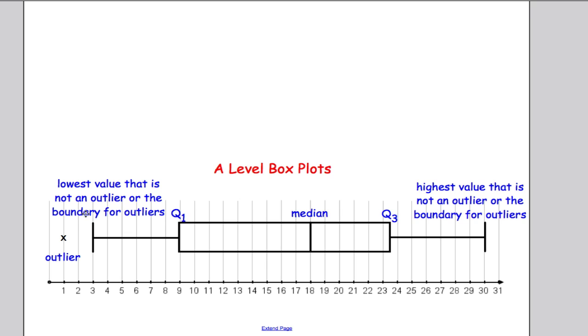So just looking at our example here, I can clearly see that this line here is going to be the lowest value that is not an outlier, and that's an outlier, and this line here is the boundary for the outliers. So this line here is the boundary for the outliers, in this case. Because we have an outlier here, this is the lowest value that is not an outlier. So it can be either or depending on whether we have outliers. So that's what an A-level box plot looks like. So let's have a look at an example.